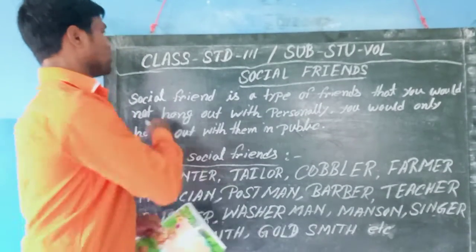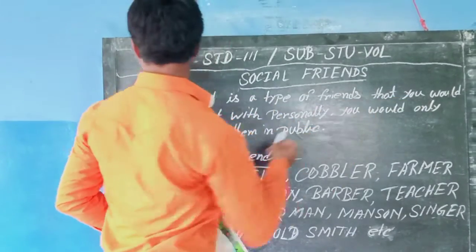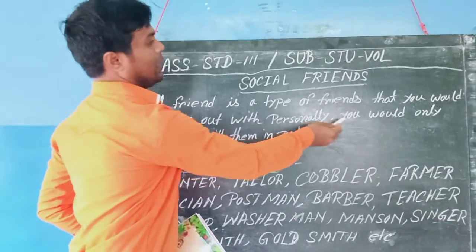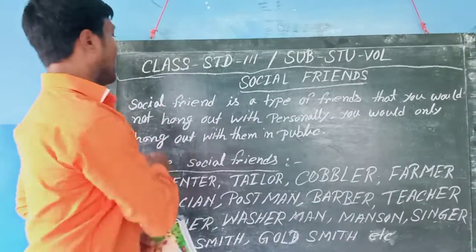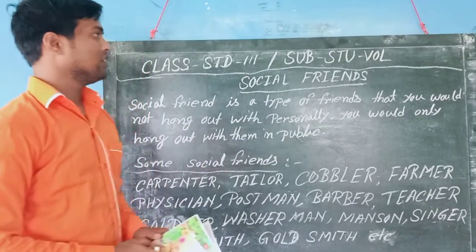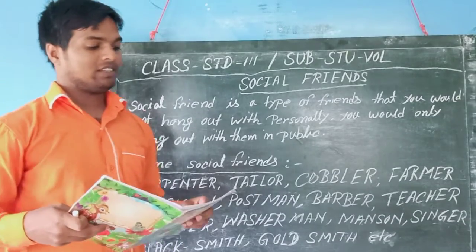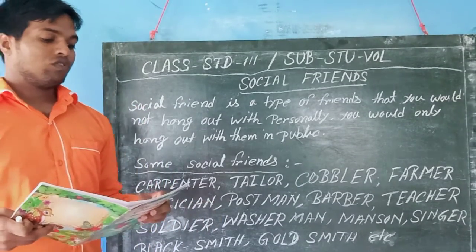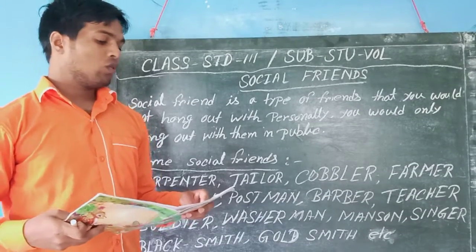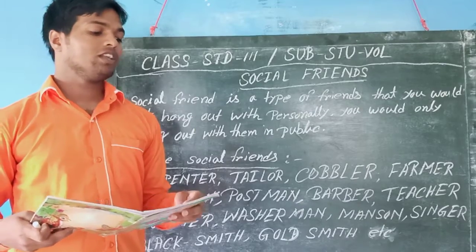Social Friend is a type of friend that you would not hang out with personally. You would only hang out with them in public. So, what is Social Friend? Social Friend is a type of friend that you would not hang out with personally; you would only hang out with them in public.